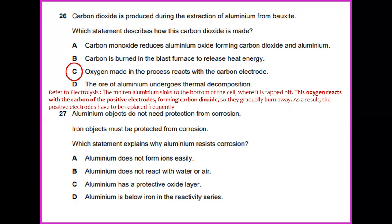The answer for this would be oxygen made in the process reacts with the carbon electrode. Aluminum objects do not need protection from corrosion. Iron objects must be protected from corrosion. Which statement explains why aluminum resists corrosion? Because aluminum has a protective oxide layer.